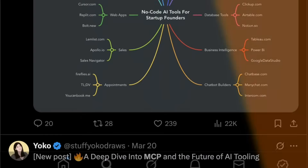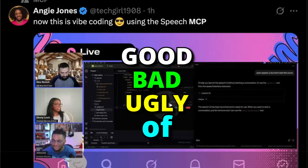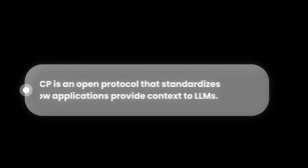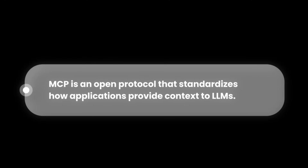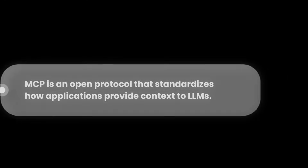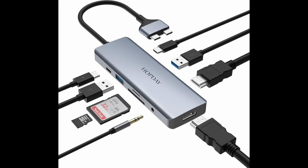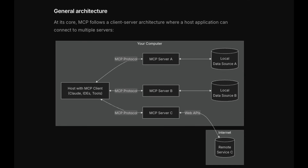MCP is all over the internet and I'm here to tell you the good, bad and ugly of MCP very briefly. In simple terms, MCP — that stands for Model Context Protocol — is an open standard that lets AI systems connect with external data and remember context more effectively. Think of MCP like a USB-C port for all AI applications; a universal connector that allows AI models to plug into different tools and data sources. This was launched originally by Anthropic.